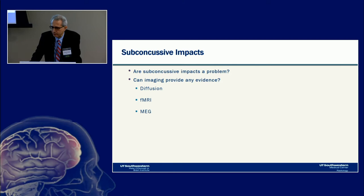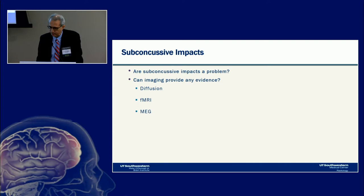This raises the question of whether subconcussive impacts have implications for the development of CTE. The topic of this talk is: are subconcussive impacts a problem, and can imaging provide evidence? We'll be looking at diffusion imaging, functional MRI, and magnetoencephalography.